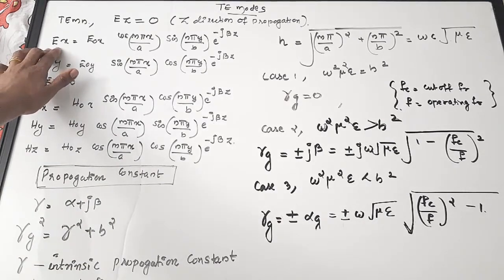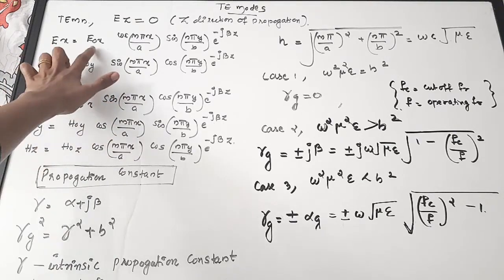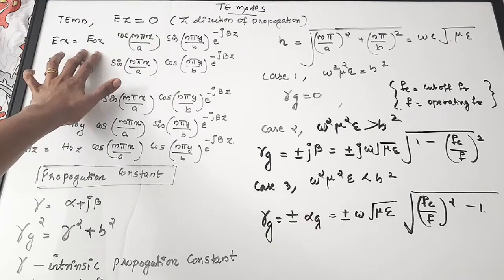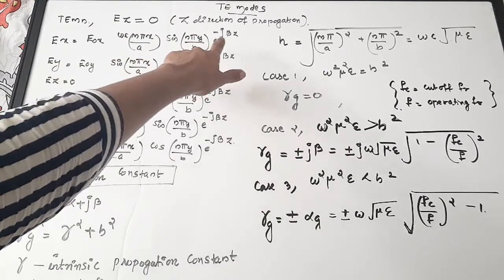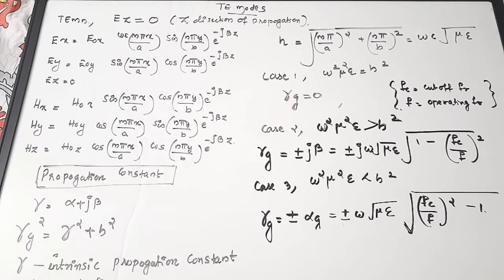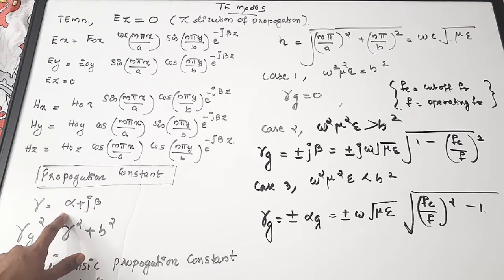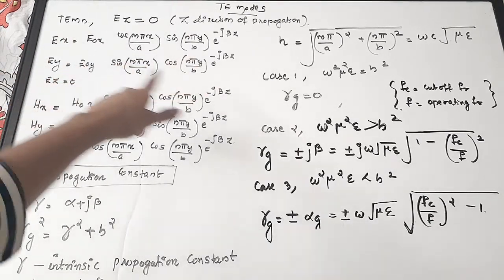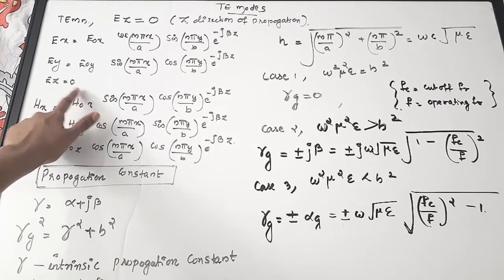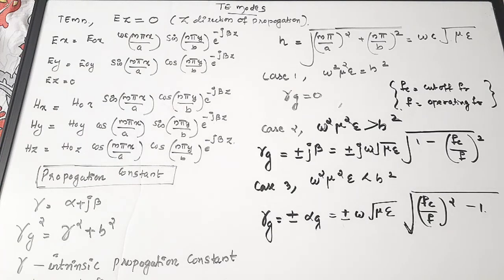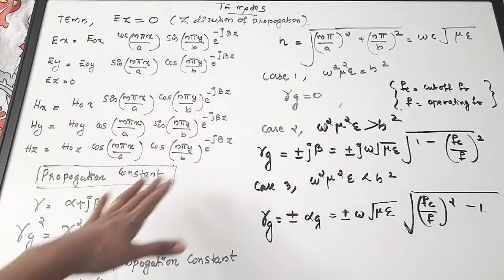The field equation for Ex is: Ex = E0x · cos(mπx/a) · sin(nπy/b) · e^(−jβz), where β is the phase constant. The propagation constant γ = α + jβ, where α is the attenuation constant and β is the phase constant. Ey = E0y · sin(mπx/a) · cos(nπy/b) · e^(−jβz). Since it is TE mode, Ez = 0.